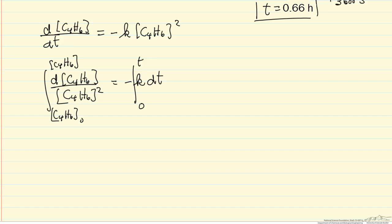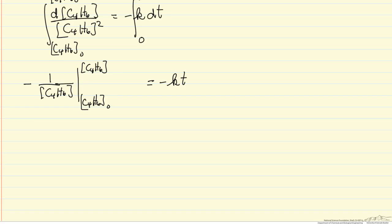So the right side is minus kT when we substitute the limits. The left side is 1 over the concentration, with the minus sign, do the integration, between the two limits. And so we can substitute in the limits, and that's equal to minus kT.